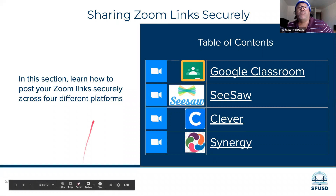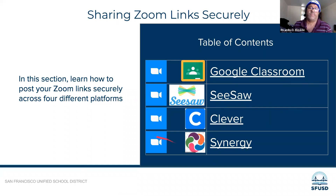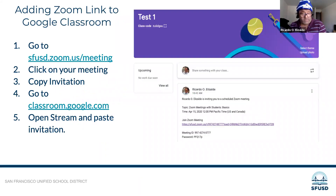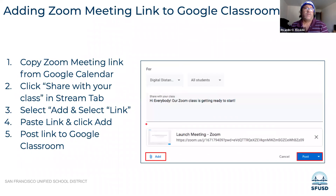The first platform is Google Classroom, the next is Seesaw, the next is Clever, and after that is your Synergy website. For Zoom invitation in Google Classroom: once you've copied your Zoom invitation, we recommend you paste it along the stream of your Google Classroom. Follow those directions and it'll get you there.